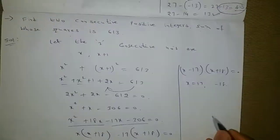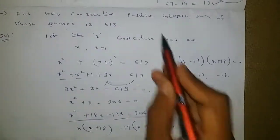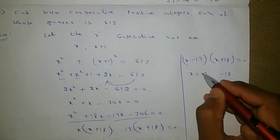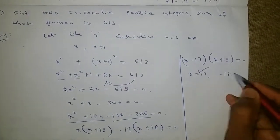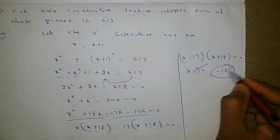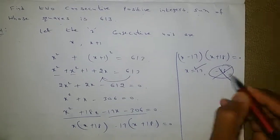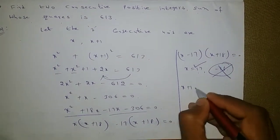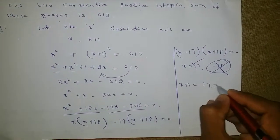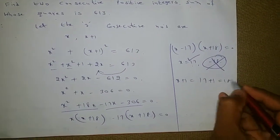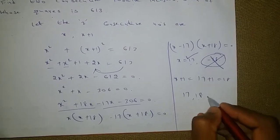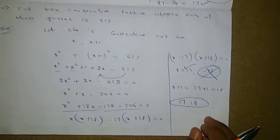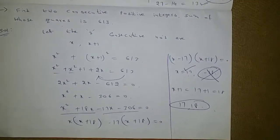Since the question specifies positive integers, we take x equals 17. So one number is 17 and x plus 1 is 18. The two consecutive numbers are 17 and 18.